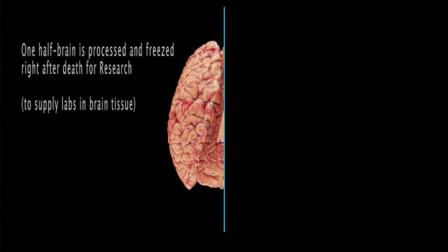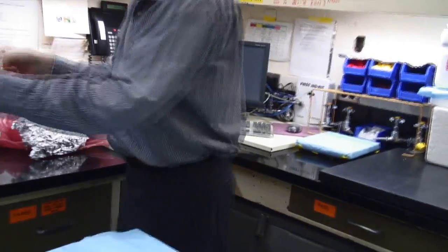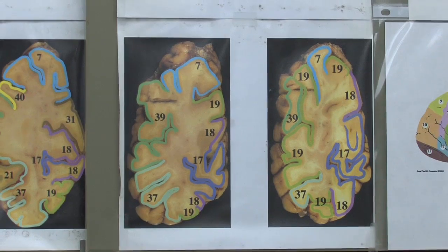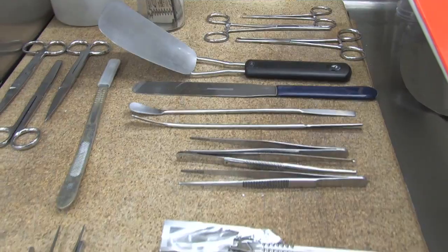When the brain comes in, we have to decide which half is used for research and which half for diagnosis. Therefore, we cannot prepare the entire brain for research. For each brain, everything is ready in advance, and we dissect the brain in coronal section — all the coronal slices are put here.